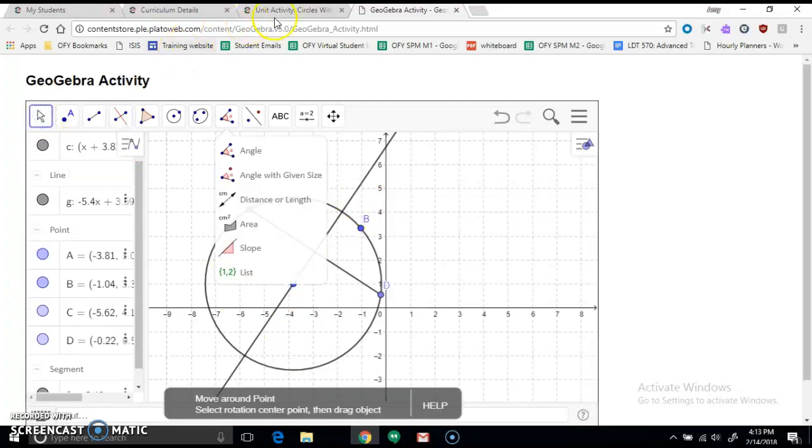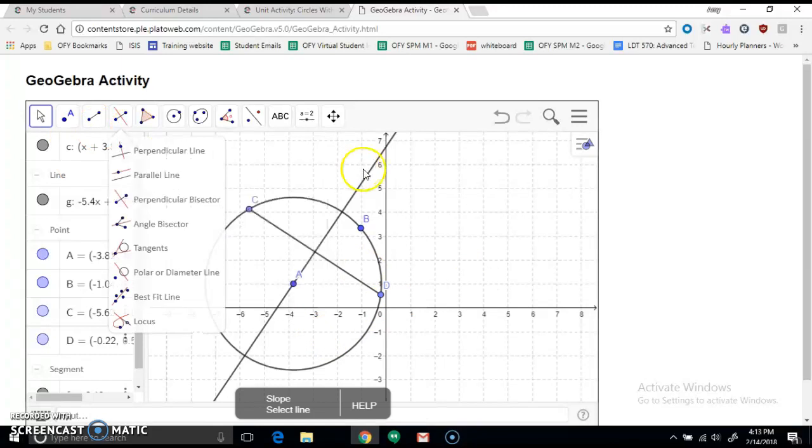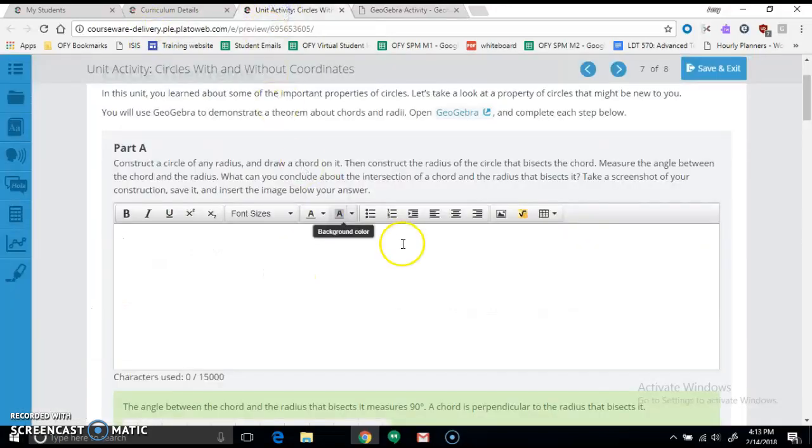So we just made a perpendicular bisector here, and this is a radius from here to here because it goes through our point. So let's go back here. Measure the angle between the chord and the radius.